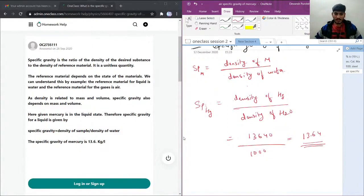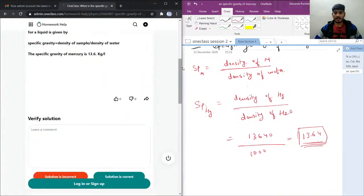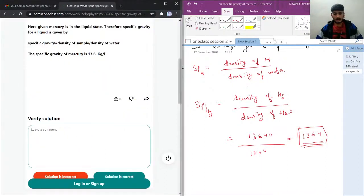The solution given here is kind of correct but there is no unit for specific gravity. So the specific gravity of mercury is 13.6. I'll write that as correct.